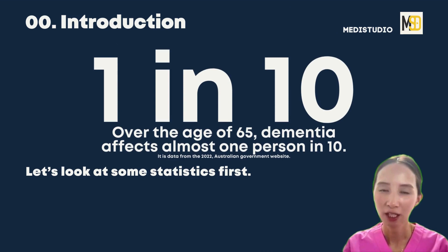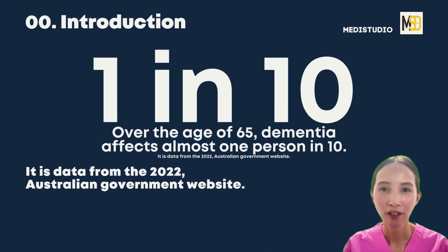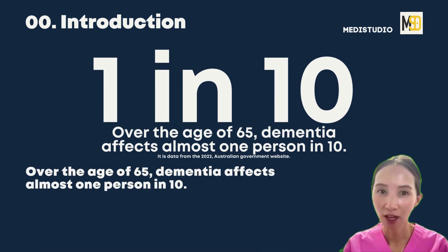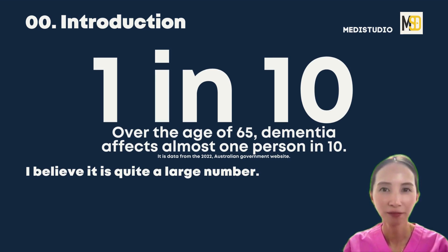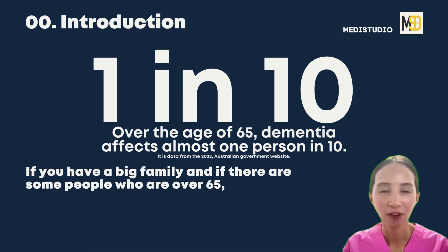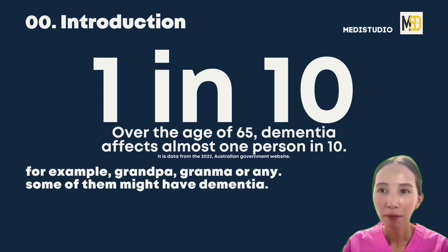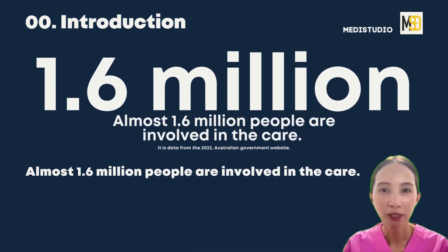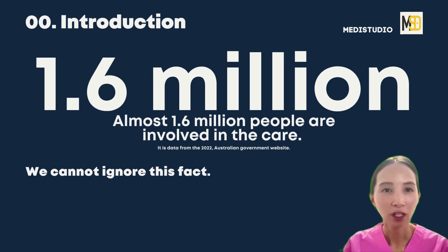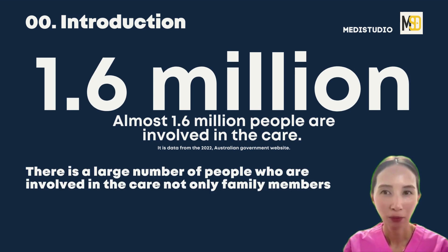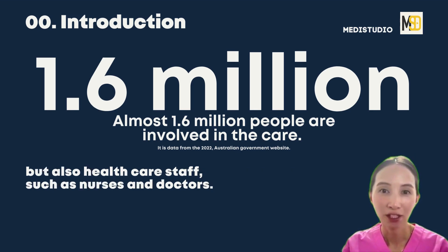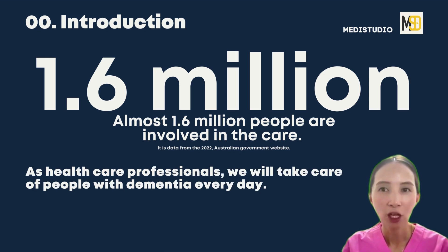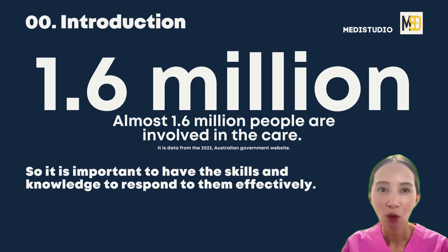We will learn the outline of dementia today. Let's look at some statistics first. It is data from the 2022 Australian government website. Over the age of 65, dementia affects almost one person in 10. I believe it is quite a large number, especially if you have a big family over 65 — for example, grandpa or grandma. Almost 1.6 million people are involved in the care, and we cannot ignore this fact. This includes not only family members, but also healthcare staff such as nurses and doctors. As healthcare professionals, we will take care of people with dementia every day, so it is important to have the skills and knowledge to respond to them effectively.